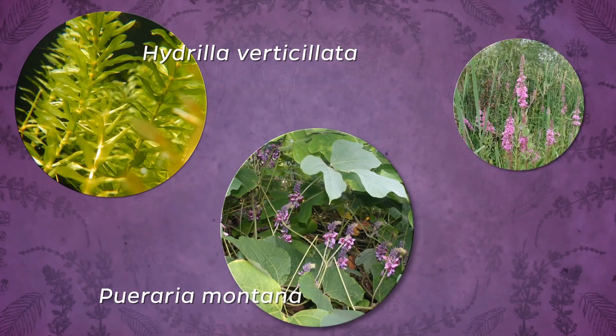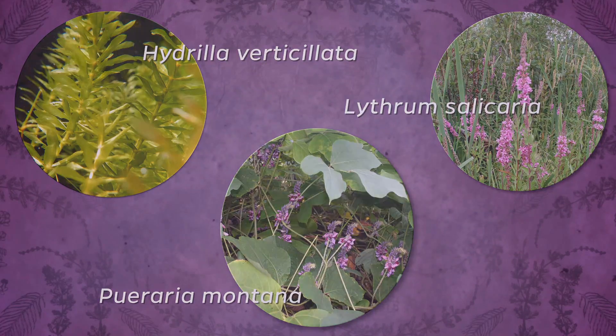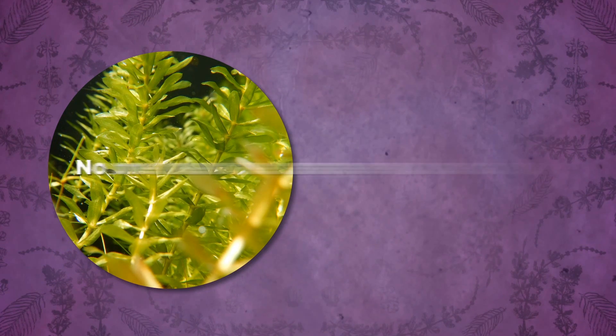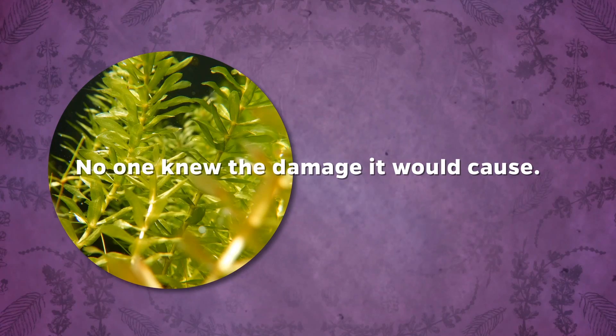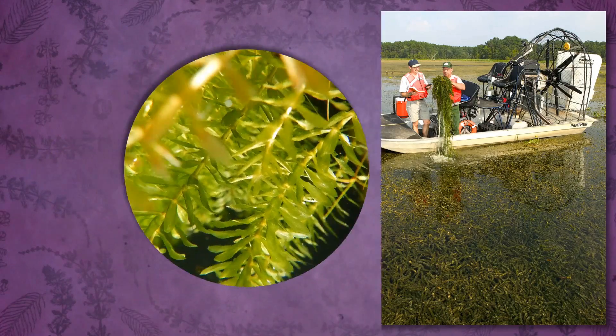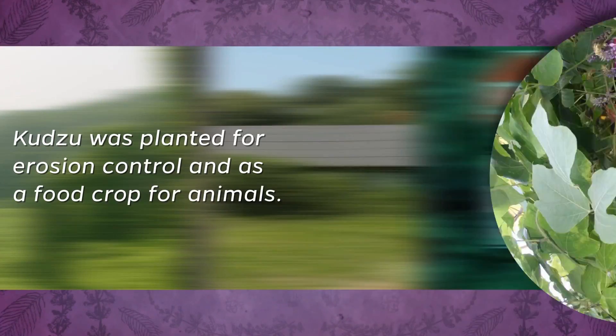Remember the non-native plants hydrilla, kudzu, and purple loosestrife? They are all invasive plants. Hydrilla was brought to the U.S. in the 1950s for use in aquariums — no one knew the damage it would cause. It can grow an inch per day in ideal conditions, and once it reaches the water's surface, it tops out and shades out other ecologically important plant species. Kudzu was planted for erosion control and as a food crop for animals. It grows over everything in its path, including other plants, buildings, and even road signs.